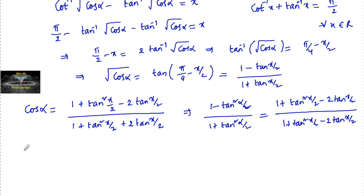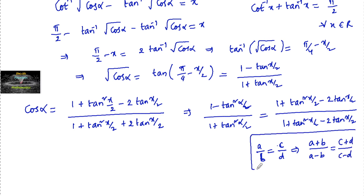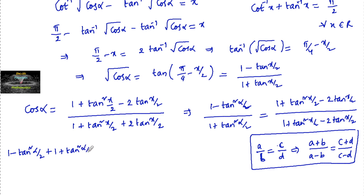Now using componendo and dividendo: if a/b = c/d, then (a + b)/(a − b) = (c + d)/(c − d). Applying this property, we write (1 minus tan²(α/2) plus 1 plus tan²(α/2)) divided by (1 minus tan²(α/2) minus (1 plus tan²(α/2))).